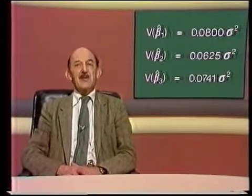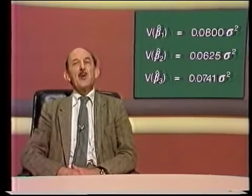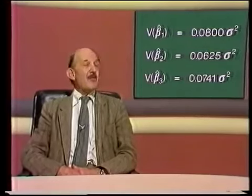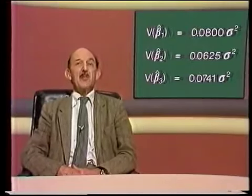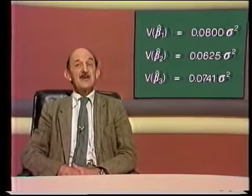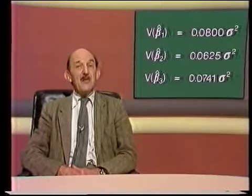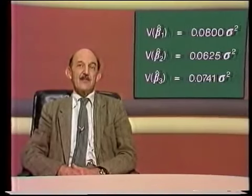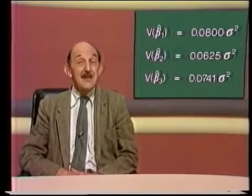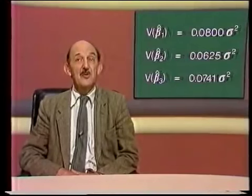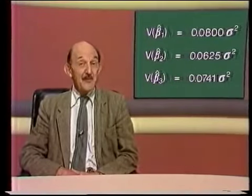Actually, it's possible to calculate the variances of the three estimators exactly without any need for simulation. We show you how in the post-program notes. Here are the values of the variances in terms of sigma squared as they come out for this particular model. Beta 2 hat has the smallest variance, as we saw, so it's the most precise of the three estimators. We say that it's more efficient than the others. In fact, with this model, there's an even more efficient estimator than beta 2 hat. It's the least squares estimator. We're not going to show it to you in this TV program, but you'll meet it towards the end of the unit. Some of you have met it already.